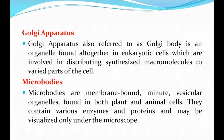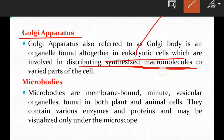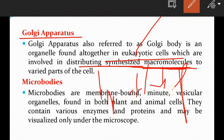Golgi apparatus, also referred to as Golgi bodies, is an important organelle found in eukaryotic cells. It is involved in distributing synthesized macromolecules — such as lipids, starch, and proteins — to varied parts of the cell.